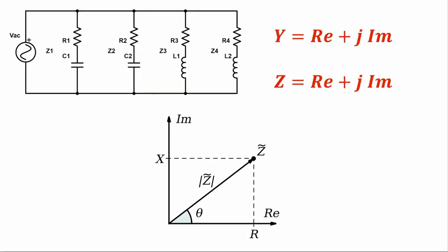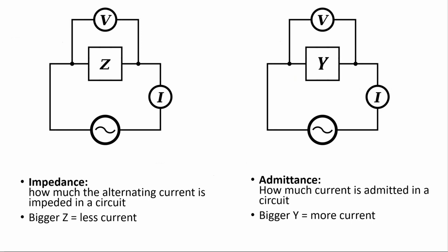Both impedance and admittance have a magnitude and a direction because they are complex quantities consisting of a real and an imaginary part. Impedance and admittance also have a certain naming logic to them. Impedance is a measure of how much alternating current is impeded in a circuit, while admittance is a measure of how much current is admitted.